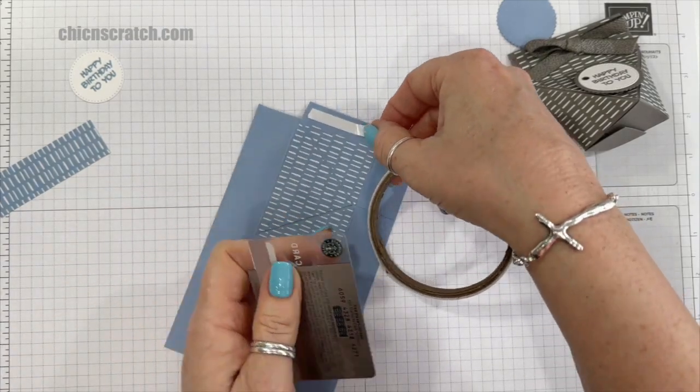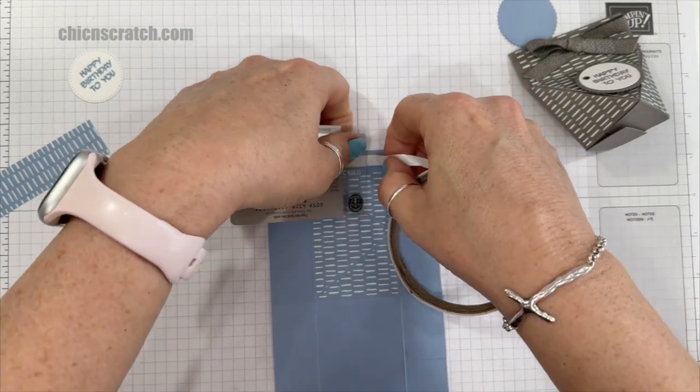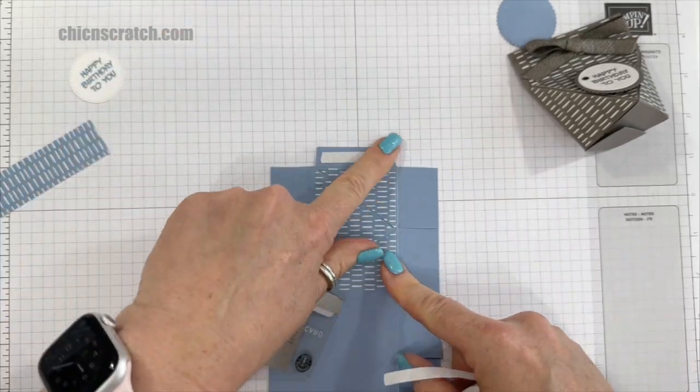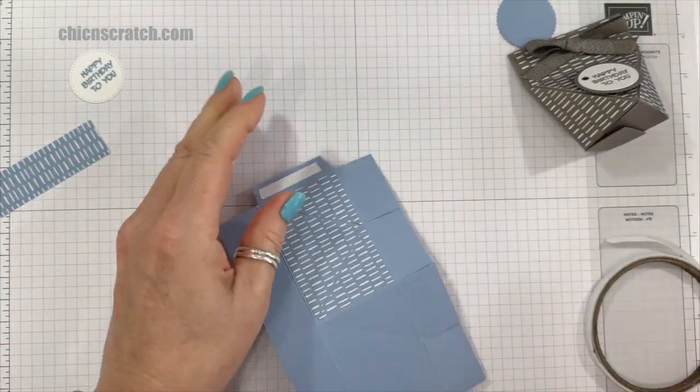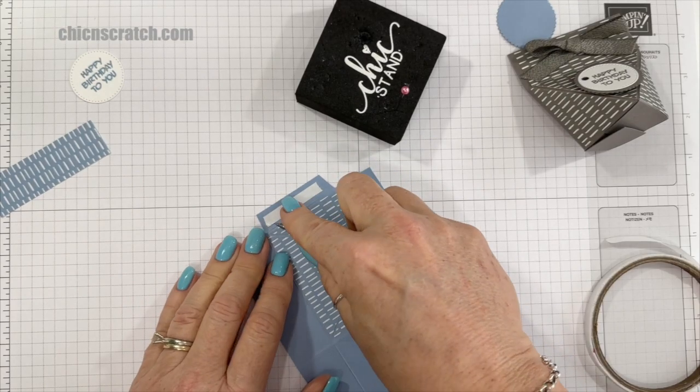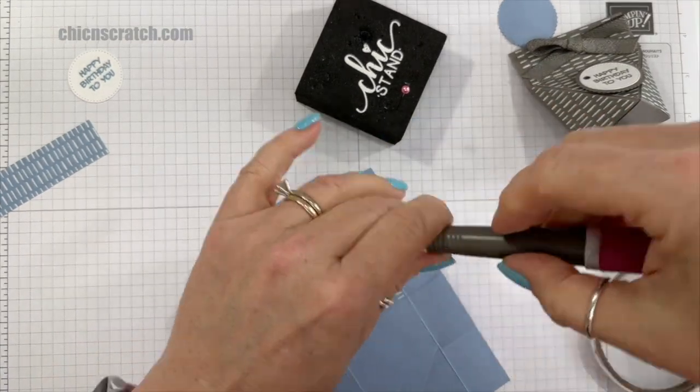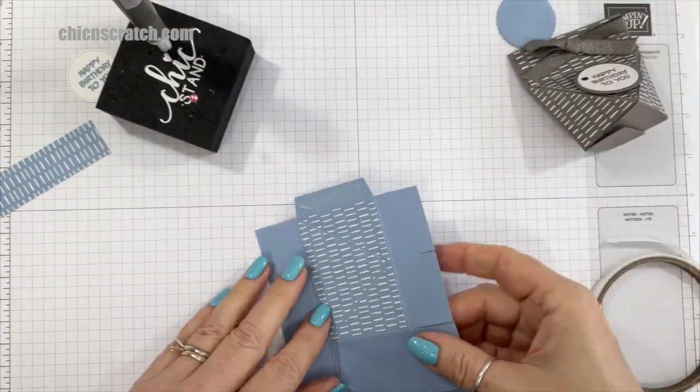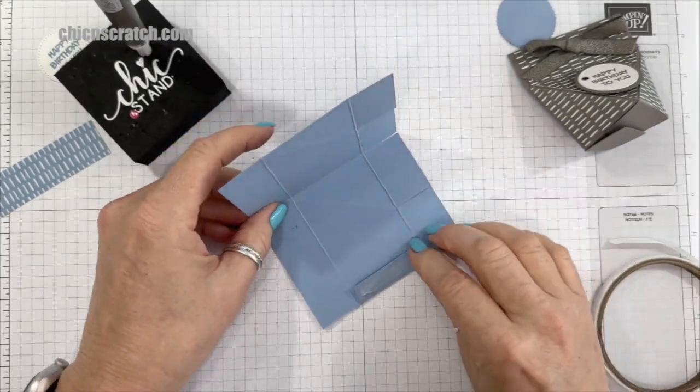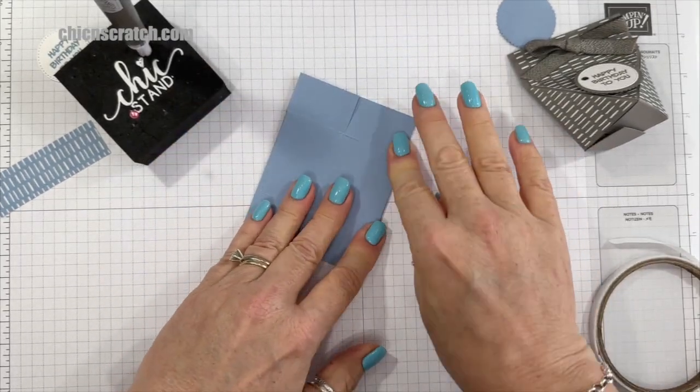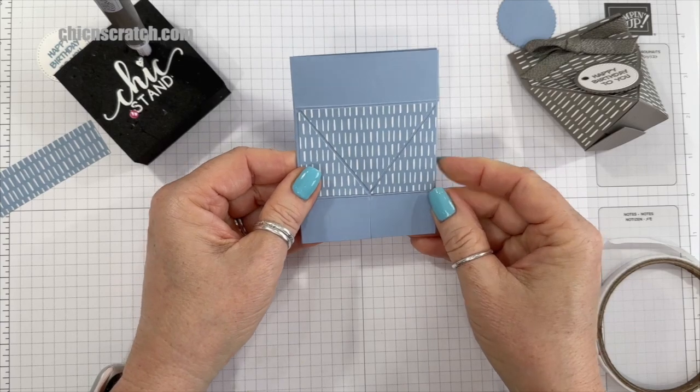And then I just want to tear that and then I'm going to use my Take Your Pick tool to remove the backing. And then we're just going to fold this down and fold that over, and that lines that up perfectly.